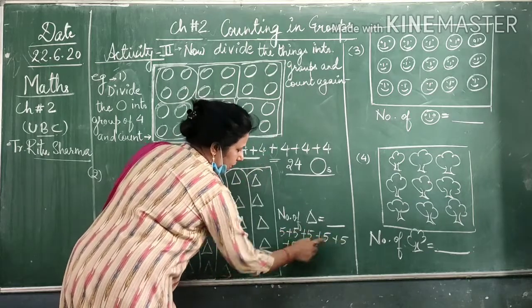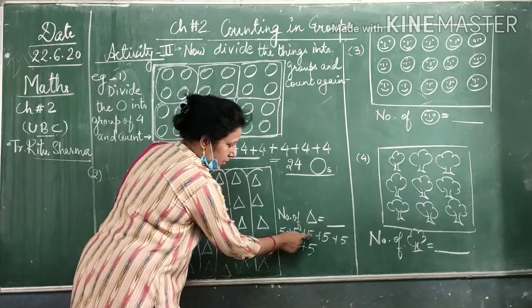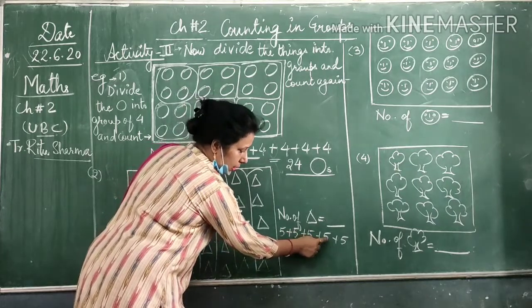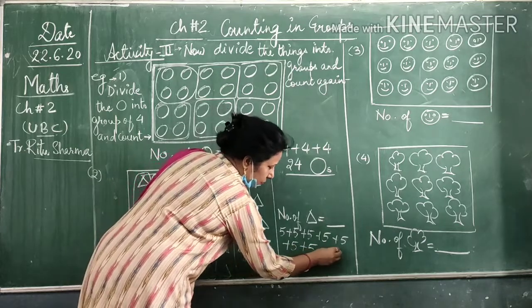5 plus 5 is 10, 15, 20, 25, 30, 35. So now 35.